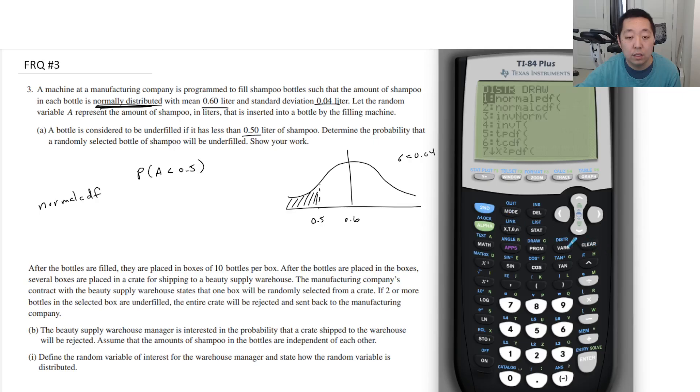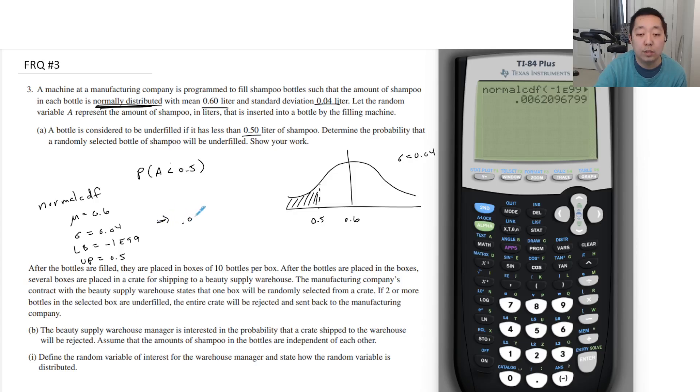Distribution normal CDF. I'm going to say the lower is negative 1E99 because I'm going to the left. Upper is 0.5, mean is 0.6, standard deviation is 0.04. So I might put the parameters on here. Mean is 0.6, standard deviation is 0.04, lower bound is negative 1E99, upper bound is 0.5, and I got a probability of 0.0062.